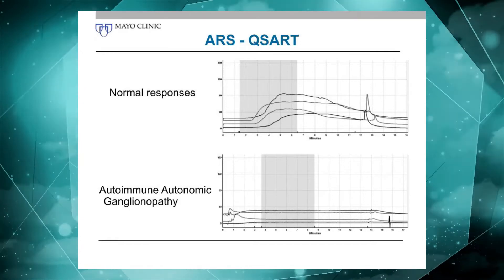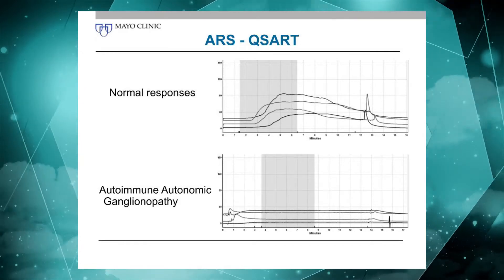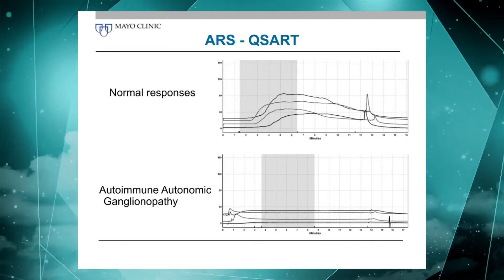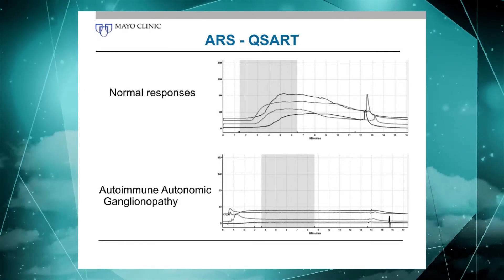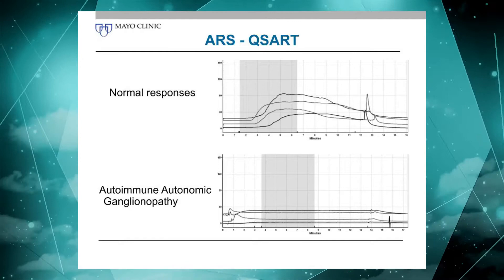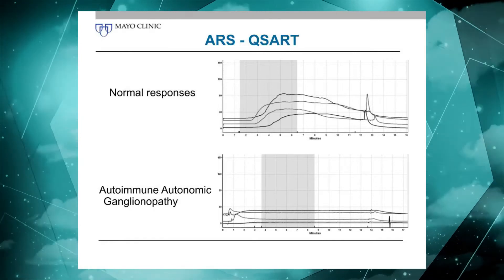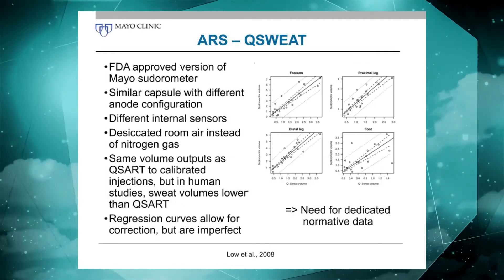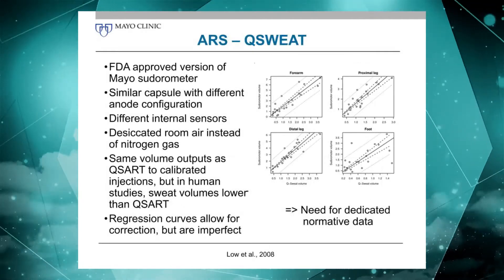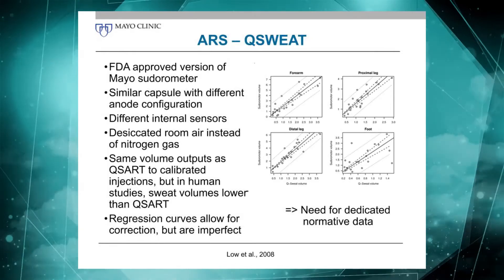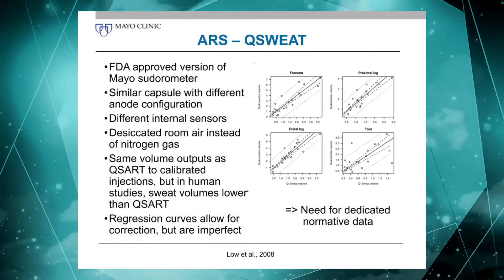Now, if someone comes in on 200 milligrams of amitriptyline, the response could look just like that. So that's something to always keep in mind — it is not always pathology that results in abnormal tests.